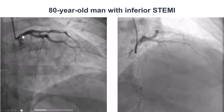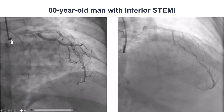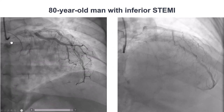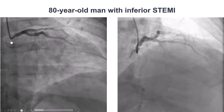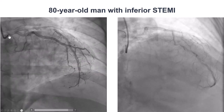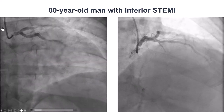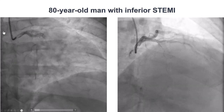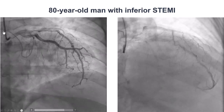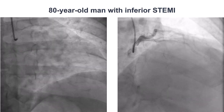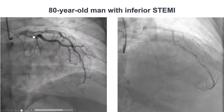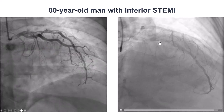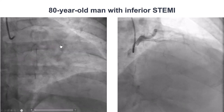This is the baseline angiogram of the left coronary system, done using right radial access. Engagement was actually difficult — we had some difficulty advancing the catheters through the subclavian because of tortuosity — but we were able to successfully engage and found no significant lesions, with only some minor disease in the LAD.